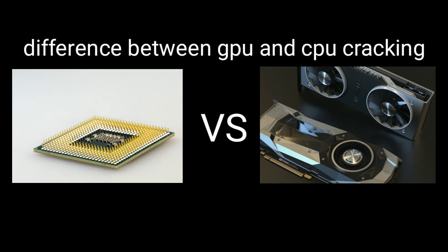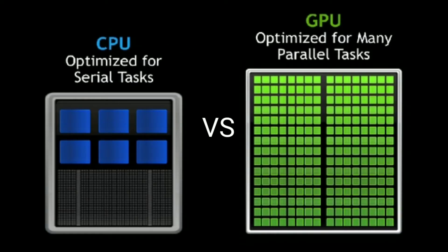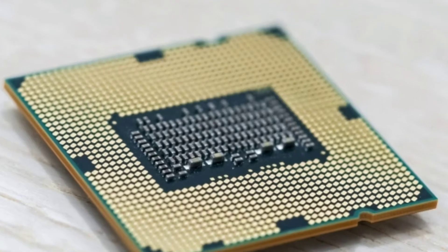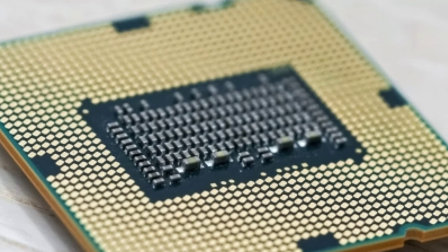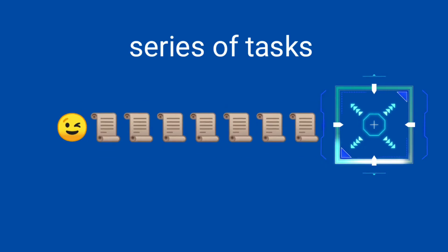Before we dive into the cracking part, we need to know the difference between GPU and CPU. The CPU is mainly used for optimization of serial tasks, and on the other hand GPU is used to optimize for tasks in parallel. Although a CPU core is much faster than a GPU core, the GPU can perform parallel instructions on multiple sets of data because the GPU has hundreds of cores.